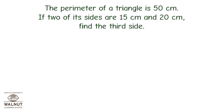Read the problem statement carefully. The perimeter of a triangle is 50 centimeters. If 2 of its sides are 15 centimeters and 20 centimeters, find the third side. The perimeter of a triangle is the sum of its 3 sides. We have been given a perimeter and the length of 2 sides of a triangle, and we have to find the length of its third side.